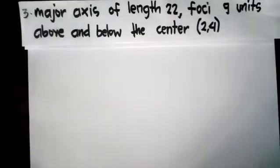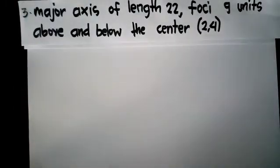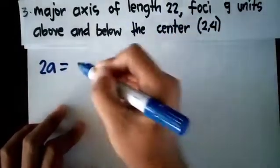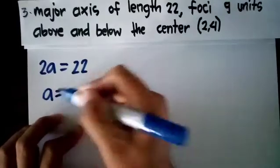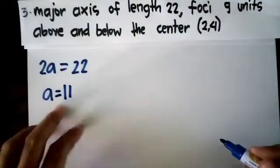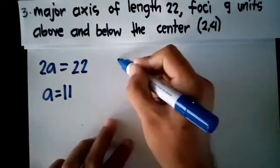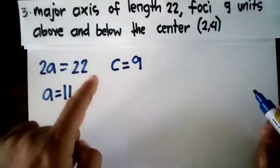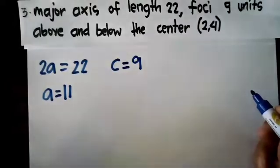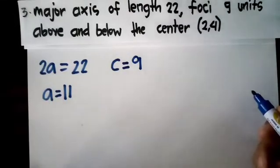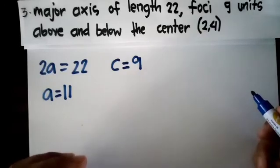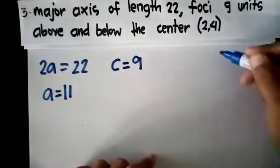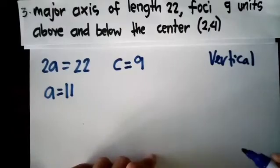So number 3: major axis of length 22, foci 9 units above and below the center (2,4). So major axis is 2a. Equate it to 22. Divide both sides by 2, so you will have 11 as your answer. Then foci 9 units, so you have an idea that c is 9. Foci 9 units above and below - it didn't say side by side or left and right. So if above and below, your ellipse is vertical. Try to analyze it clearly. So above and below, your ellipse is vertical.